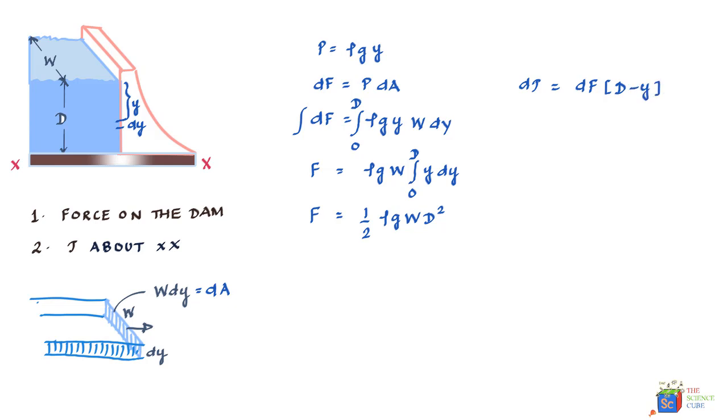Now you can see we've already derived the expression for dF and all we need to do is substitute it over here. So dF is nothing but ρgy w dy and your distance we know is d minus y, and we just need to integrate this now as y changes from 0 to d.